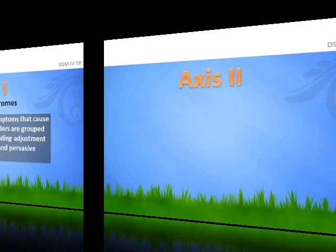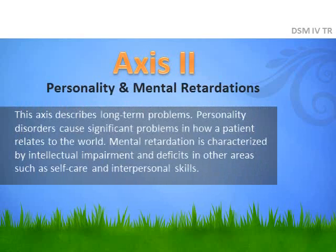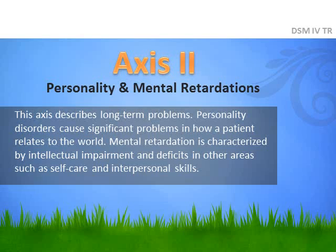Axis 2 in the DSM-4TR describes personality disorders and mental retardation. It is an important segment of the book that focuses primarily on long-term problems that tend to negatively affect other areas of the patient's life, such as self-care and interpersonal skills.